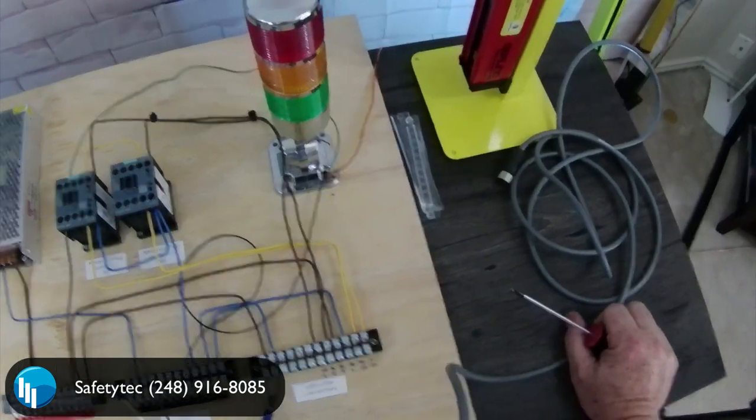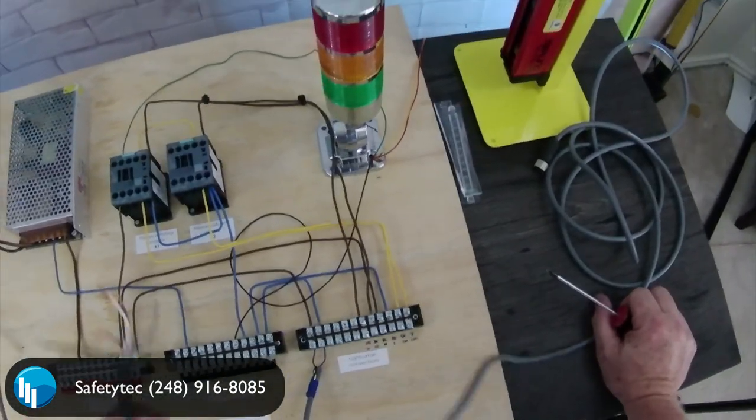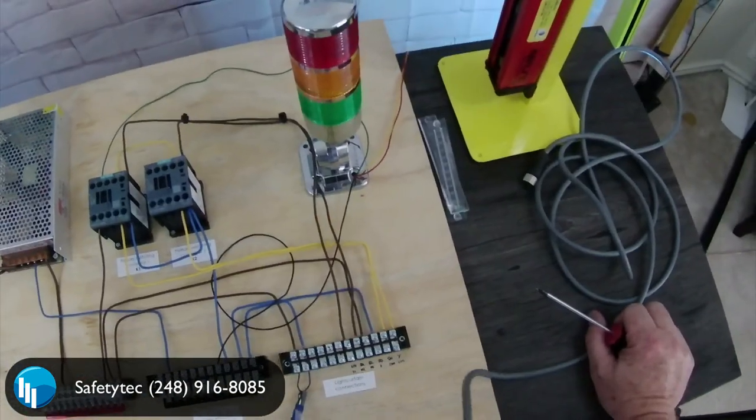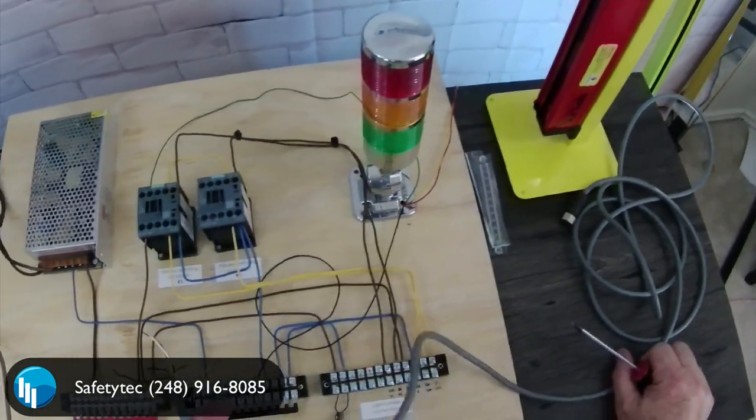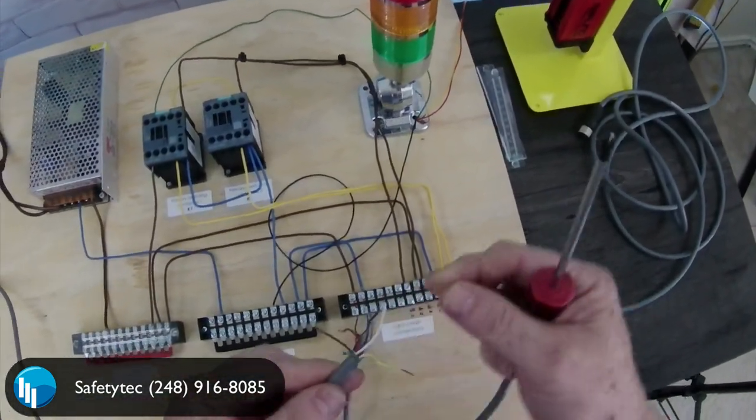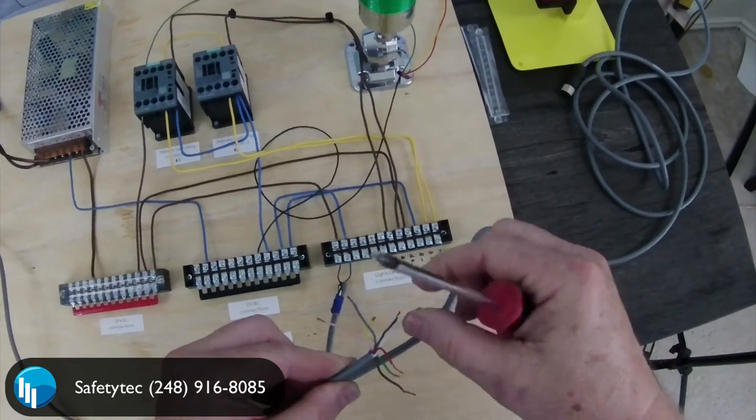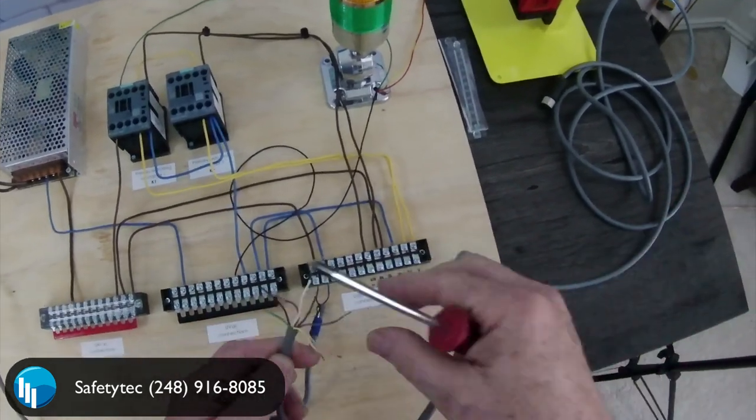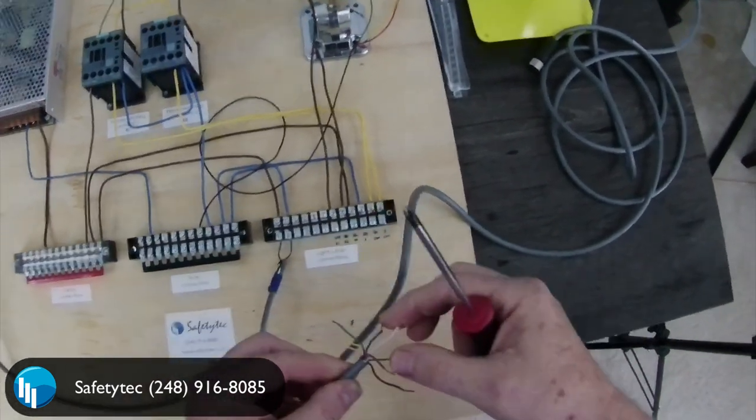Now you can, if you want to, tie it into a safety PLC or a safety relay or some other controller if you want to, but it doesn't need it. That's one of the reasons why it's so easy to use, to install, to wire up - because there's no reason for anything else.